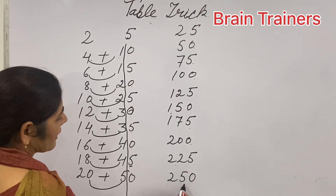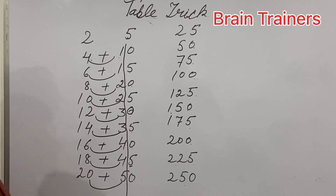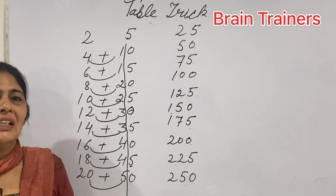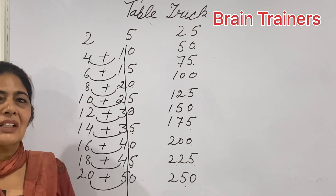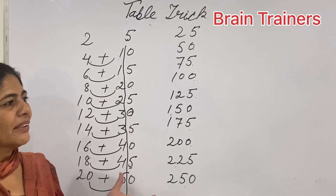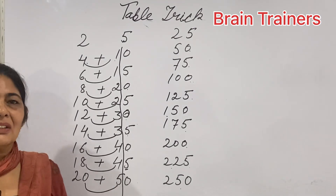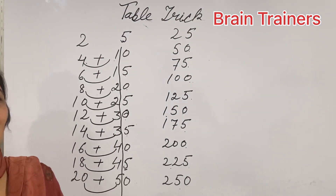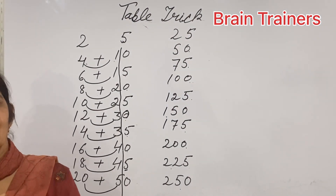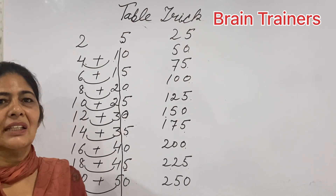This is 25. This is a table for 99. If you have any problem, please ask questions. Thanks. Please like and share.